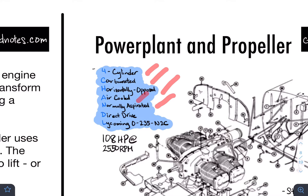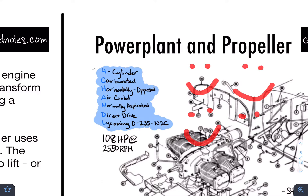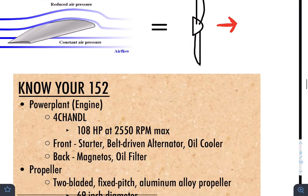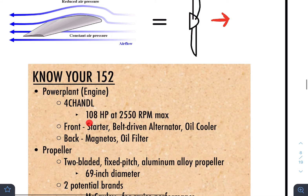Let's go over the acronym one more time: four cylinders, carbureted, horizontally opposed, air-cooled, normally aspirated, direct drive, and the Lycoming O-235-N2C engine. A way to memorize this is to imagine four people named Chandler all in the same box — four Chandle. At max performance, this engine produces 108 horsepower at 2,550 RPM.